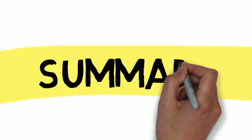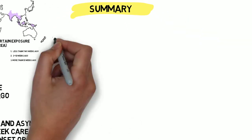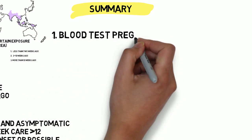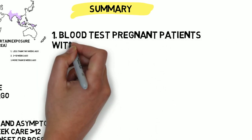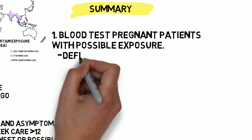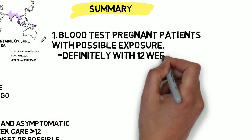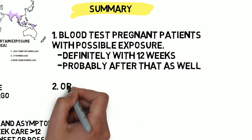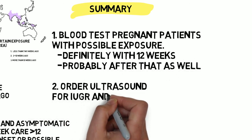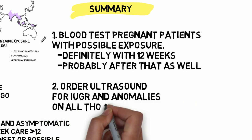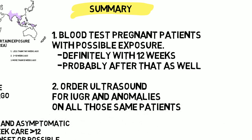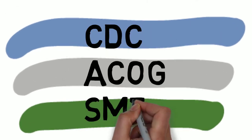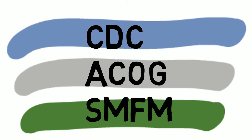This is in no way comprehensive — identifying those at high risk and testing them are both complex. Here's the summary: test patients with possible exposure, definitely within 12 weeks of exposure, and probably after that if they're currently pregnant and were pregnant at the time of exposure. Order an ultrasound for IUGR and anomalies on all of those patients. Refer to the CDC, ACOG, or SMFM websites, and speak to the health department personally for anyone in question. Thank you.